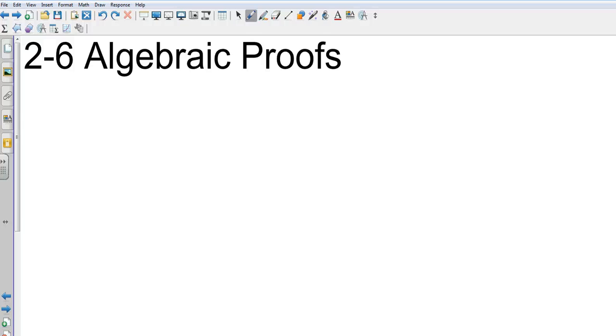Okay, we are on 2-6 Geometry Algebraic Proofs. Yesterday we talked about postulates being statements of fact, and today we're going to take that one step further. We're actually going to put numbers to it. Anytime you see algebraic, that means we're going to have some variables and some numbers all put together.